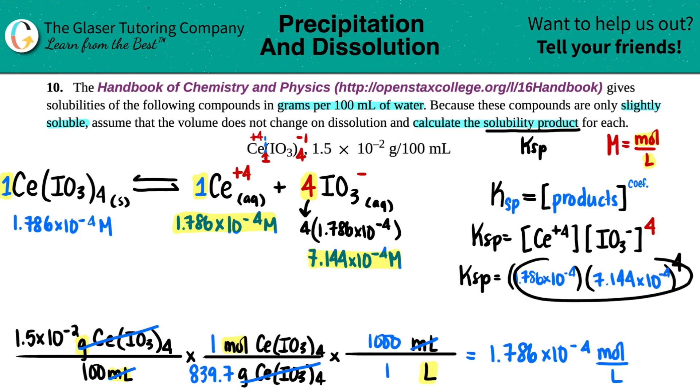You could take your time, plug it in. I'm just going to do it all in one shot, and then we'll get the final answer. I have that number raised to the fourth, and then I'm just going to multiply it by 1.786 times 10 to the negative fourth. Two sig figs. So if we rounded it, it would be 4.7 times 10 to the negative 17th. KSPs do not have units, so it's just a number.